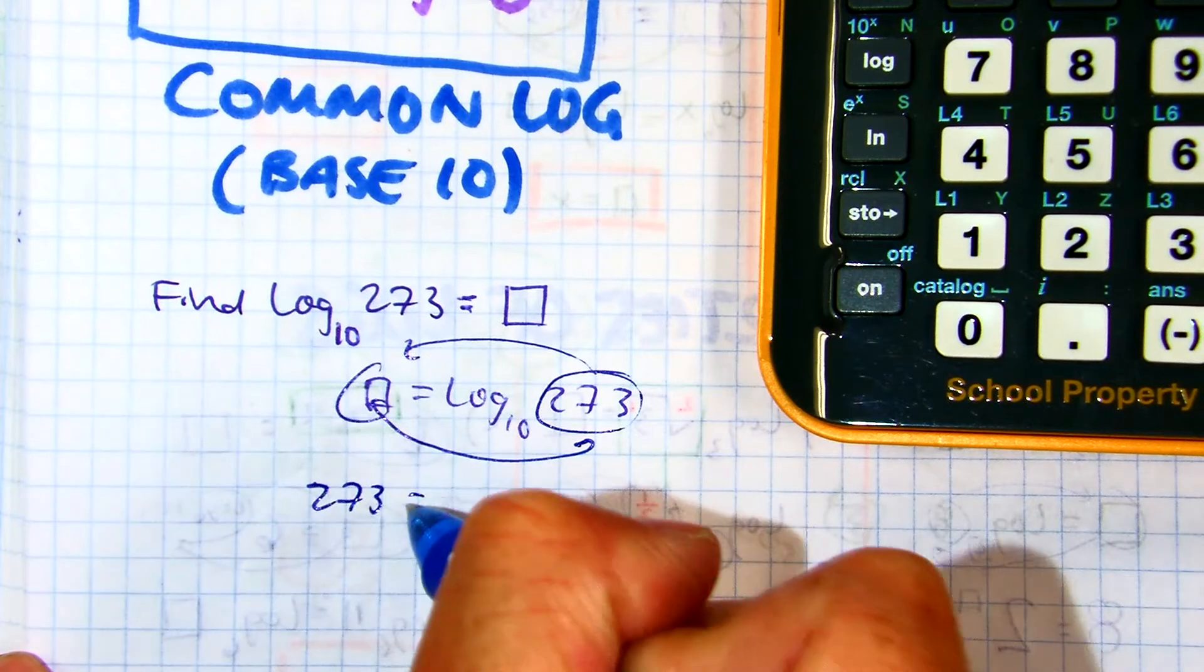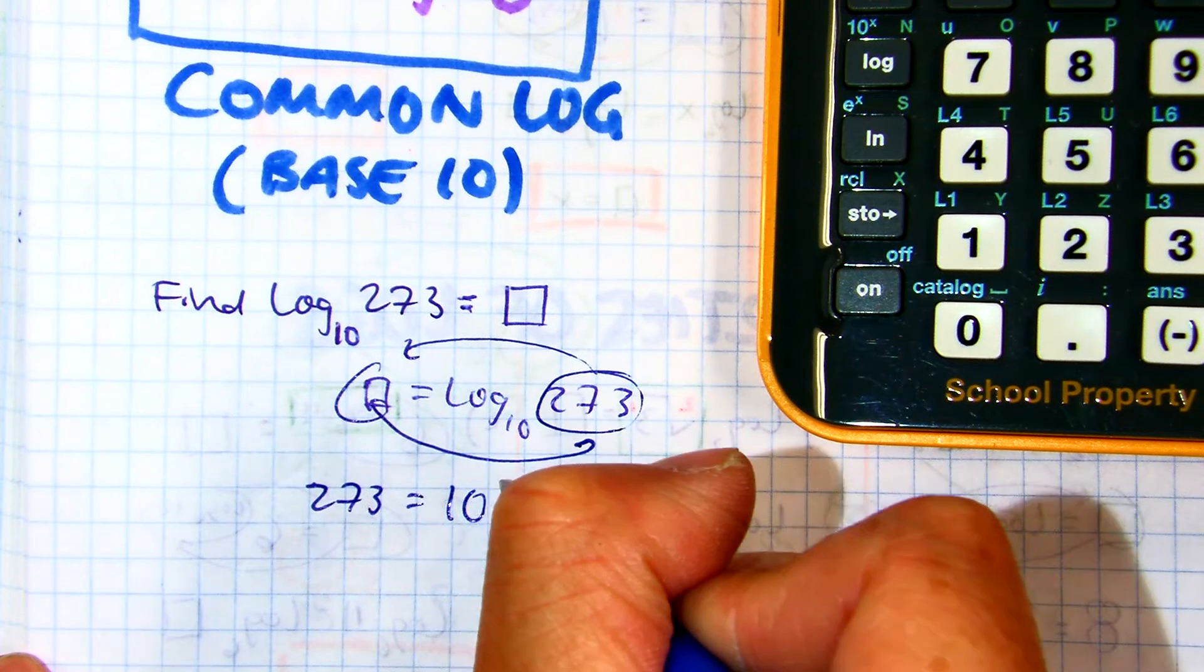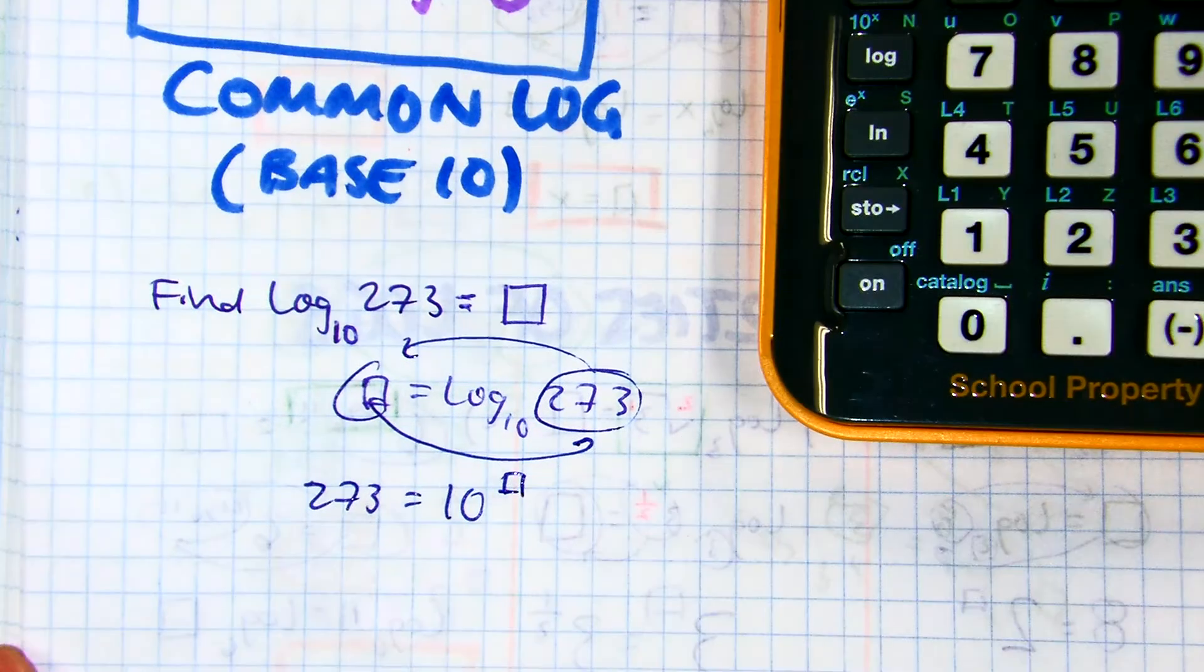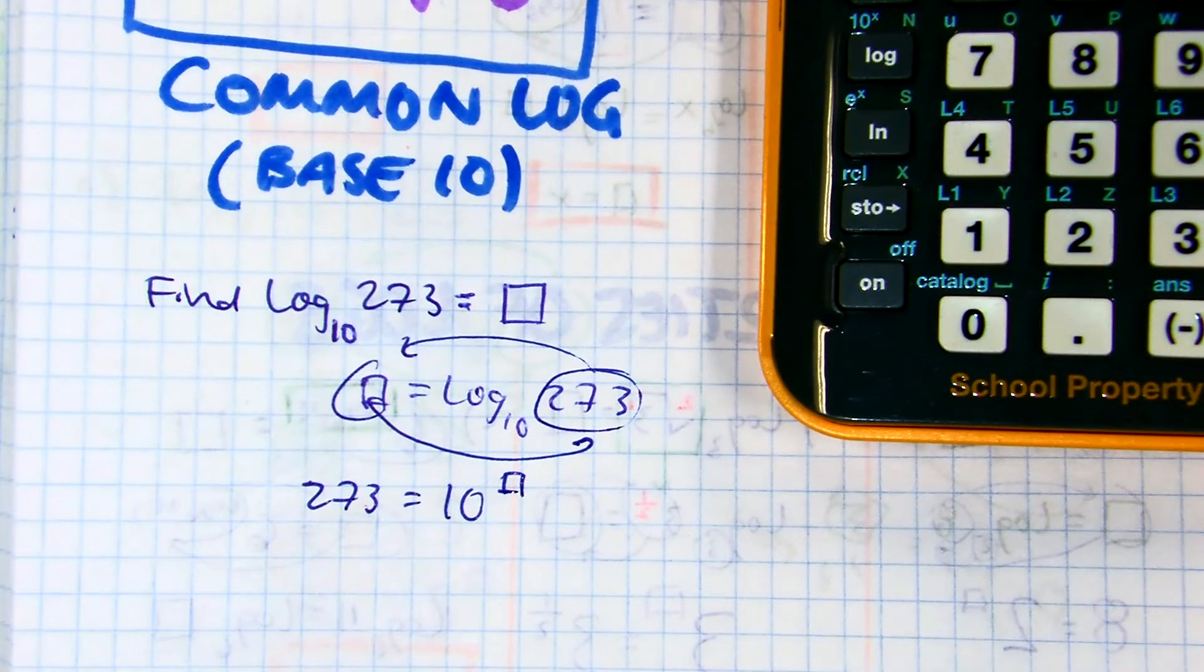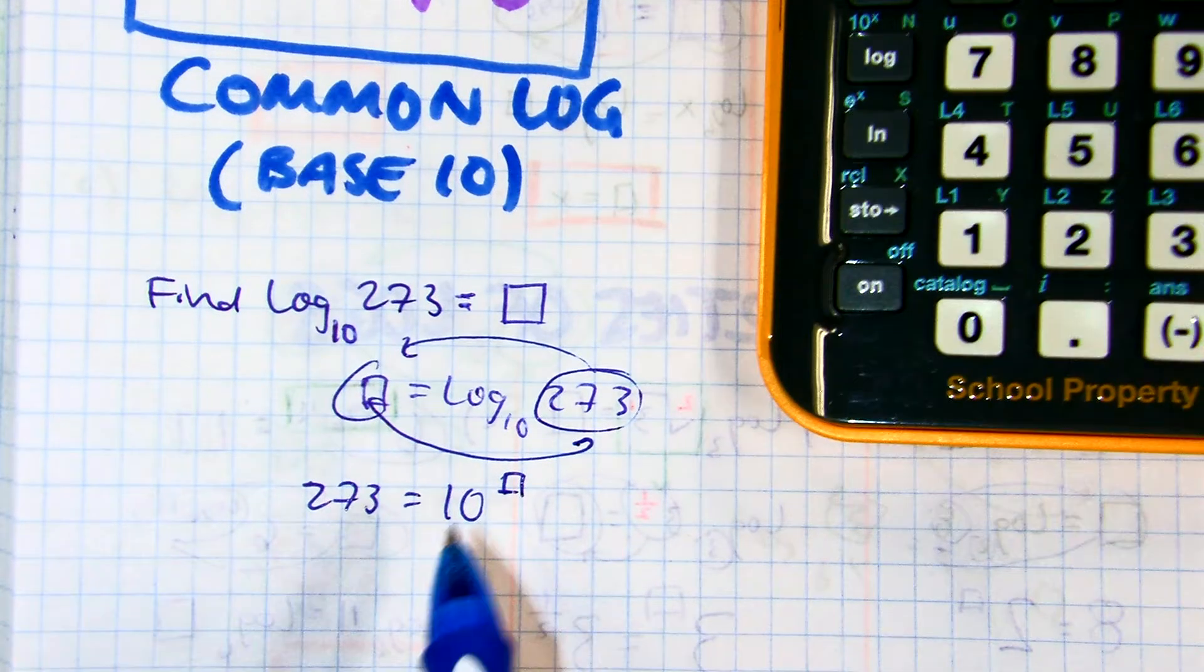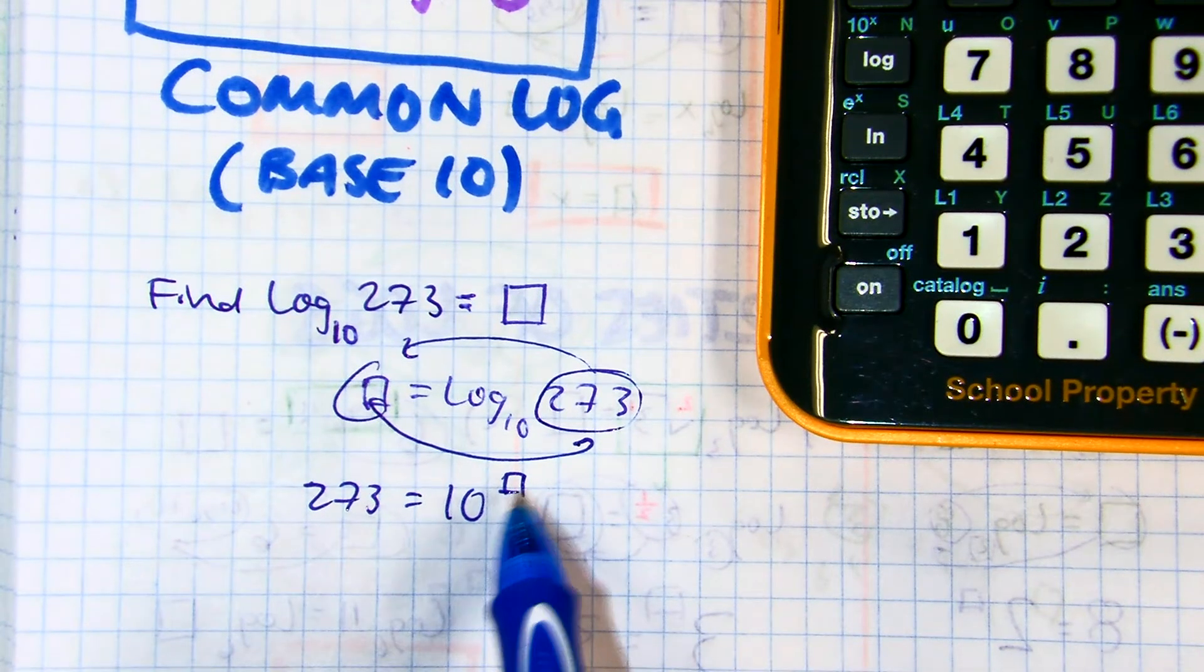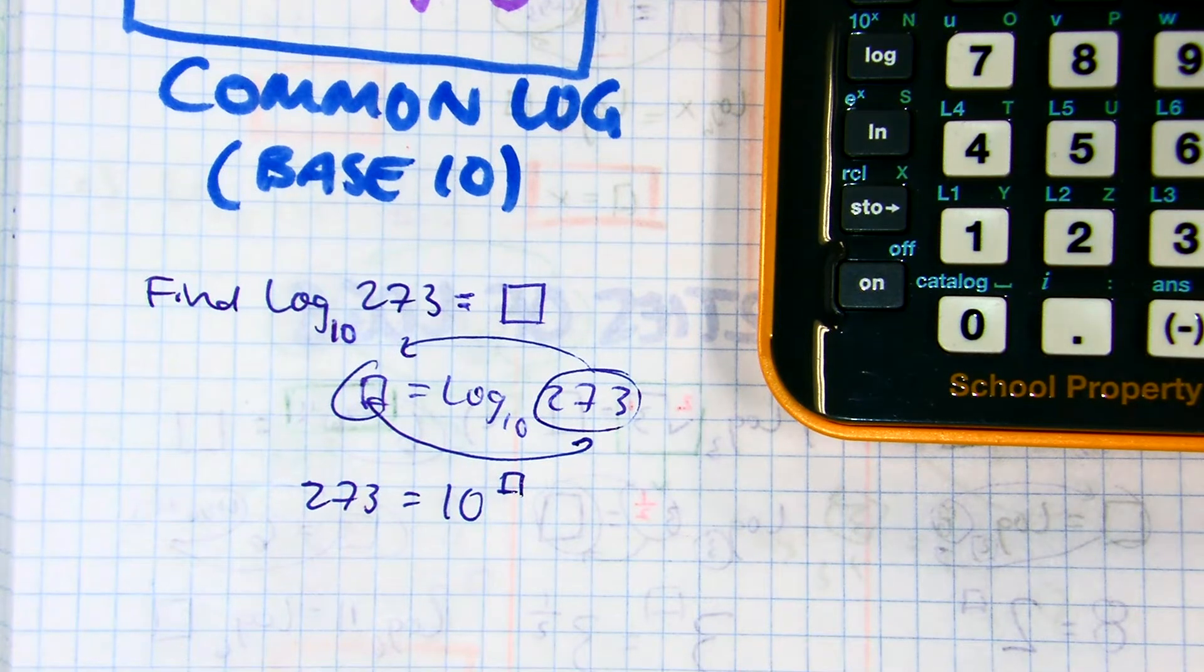273 equals 10. Can anyone think of a number to the 10th power that equals 273? Is it a whole number?